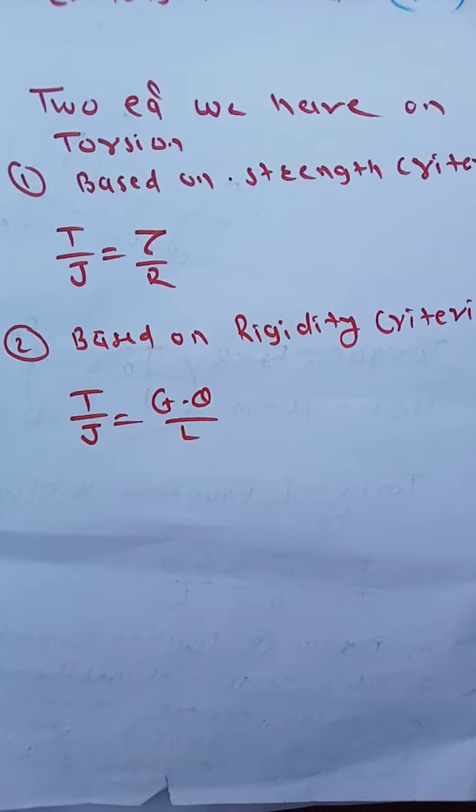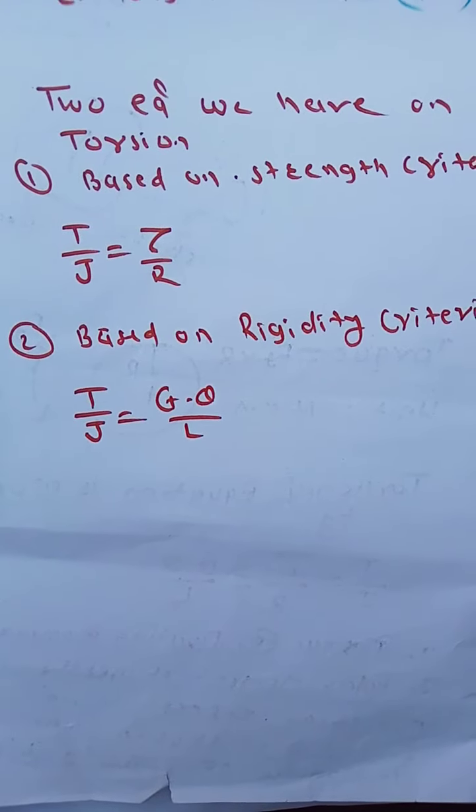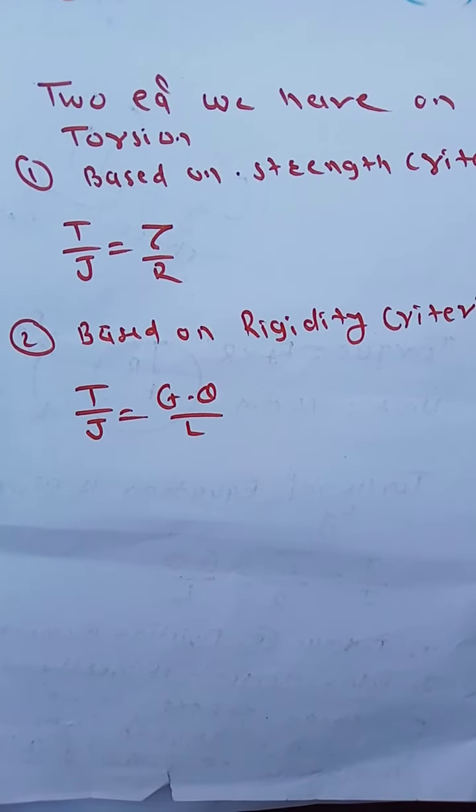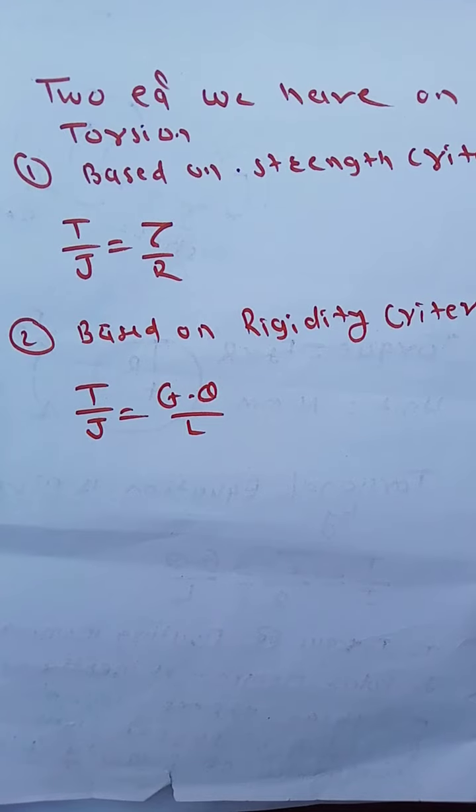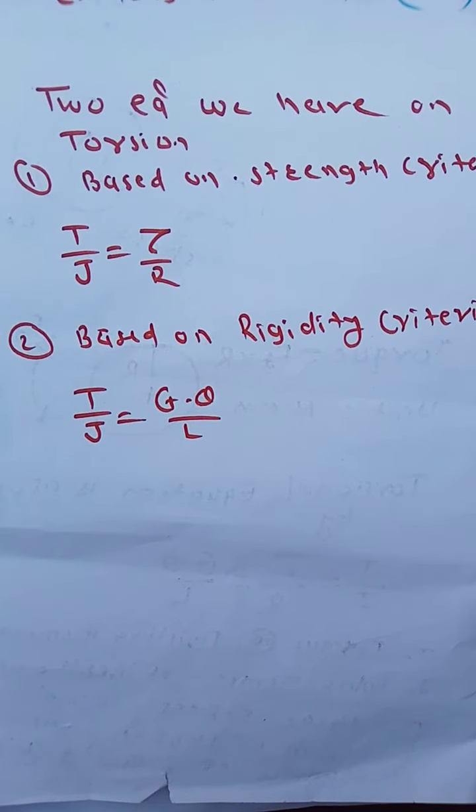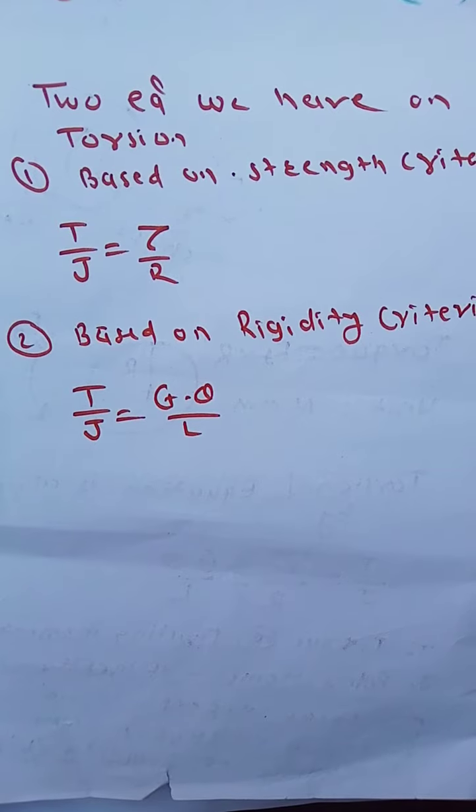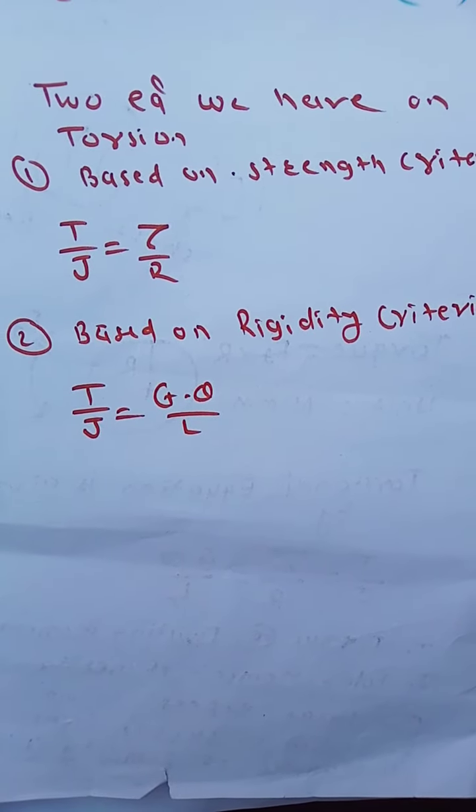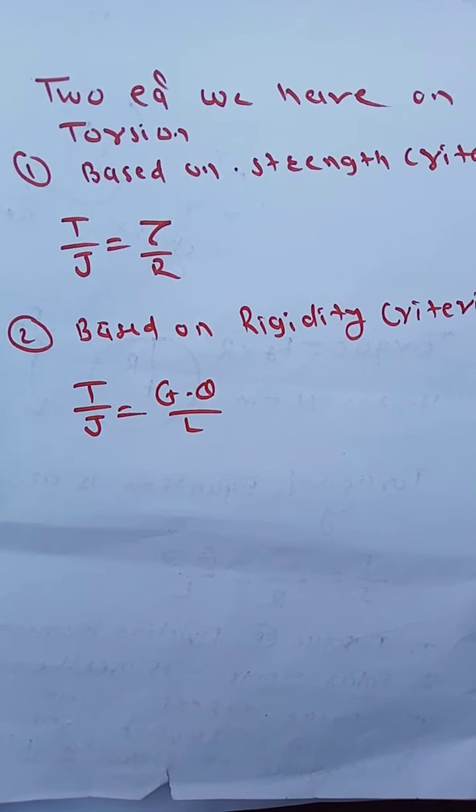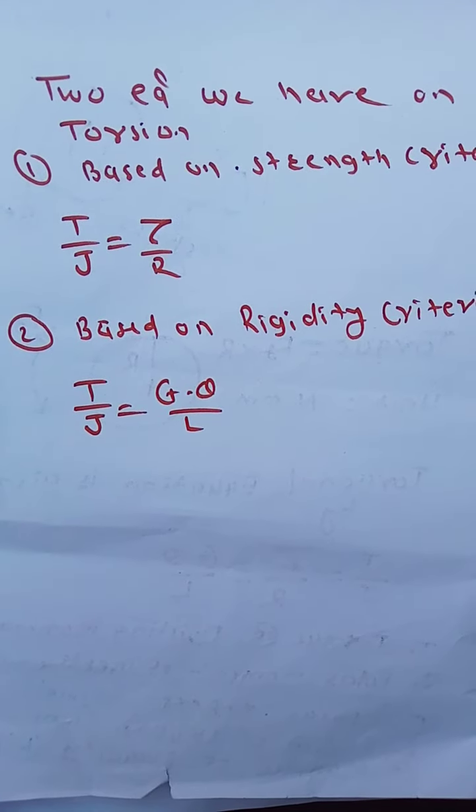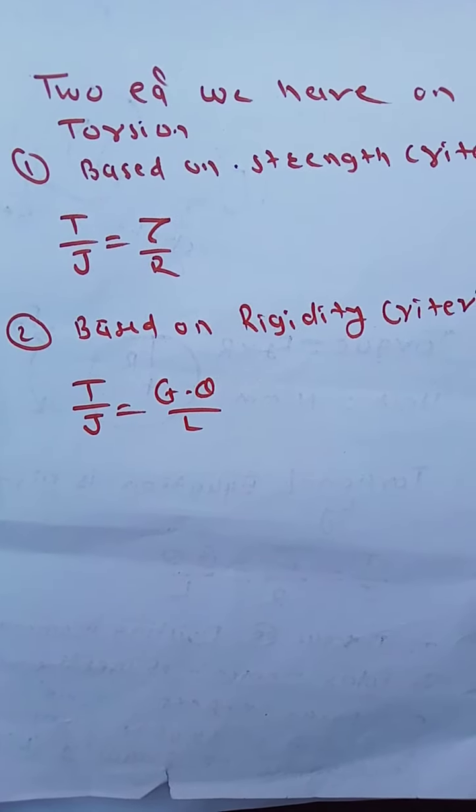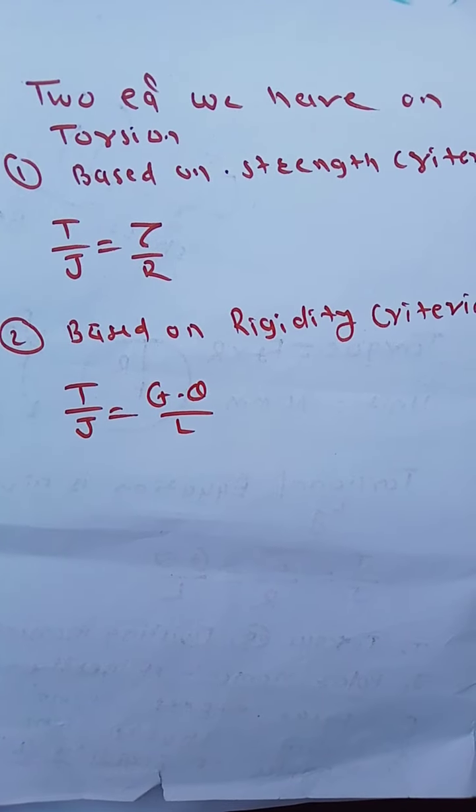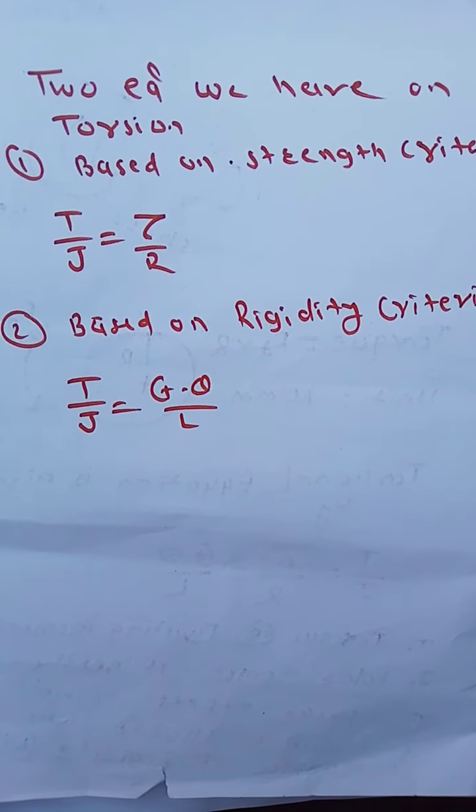While solving numericals, we should know two criteria based on torsion: first, based on strength criteria; second, based on rigidity criteria. Based on strength criteria, we have the relation T upon J equals to tau upon R. Based on rigidity criteria, T upon J equals to G theta upon L because of G and theta.